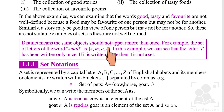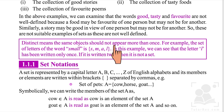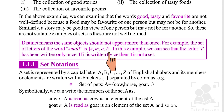Distinct means the same object should not appear more than once. For example, the set of the letters of the word 'small': S, M, A, L — in this example, the letter L has been written only once. If it is written twice, it will not be a set. Distinct means the specific objects in a set should not repeat — each element must appear only once. When a set's elements are both distinct and well-defined, only then can we call it a set.